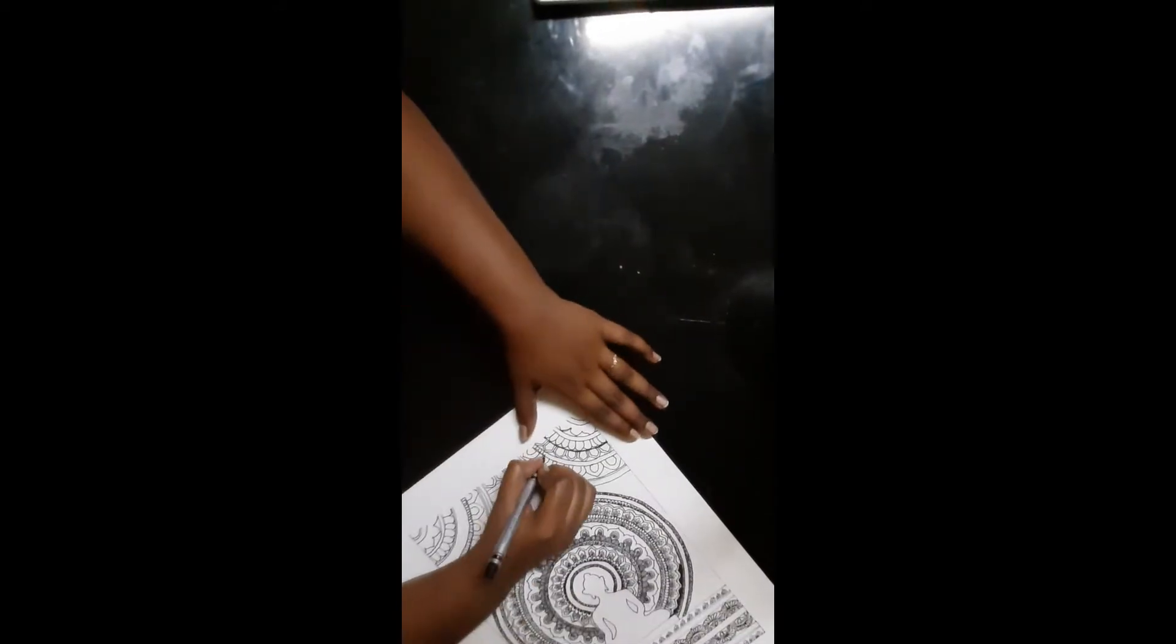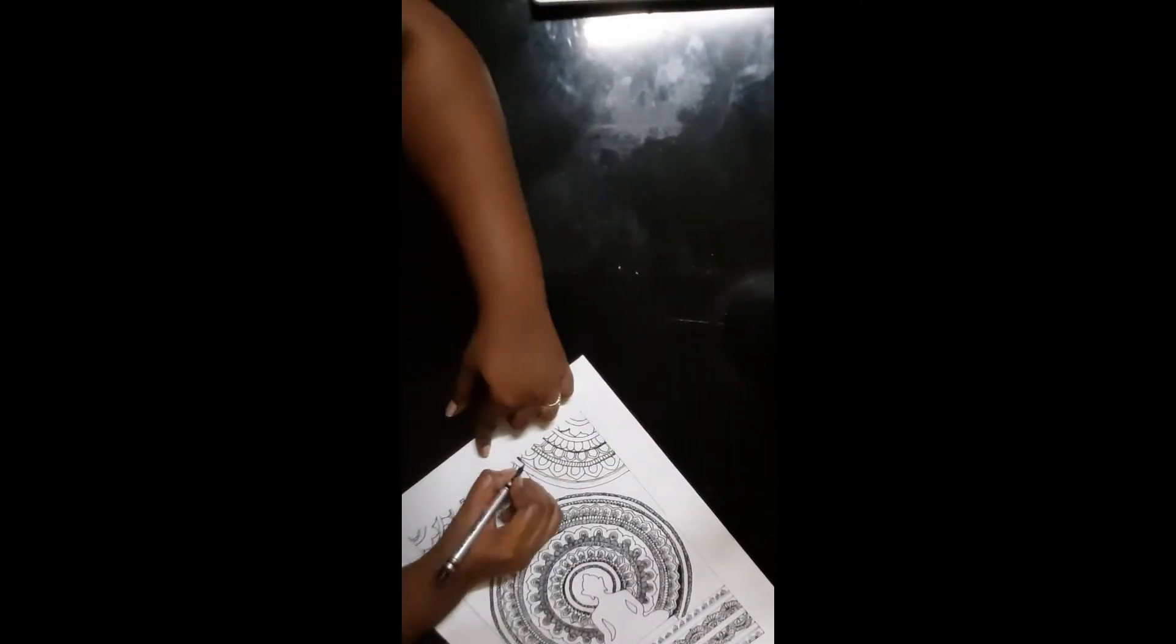They can have the shape of a circle, semi-circle, triangle, square, or any other figures.